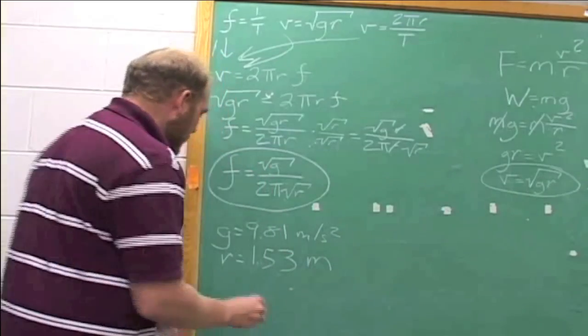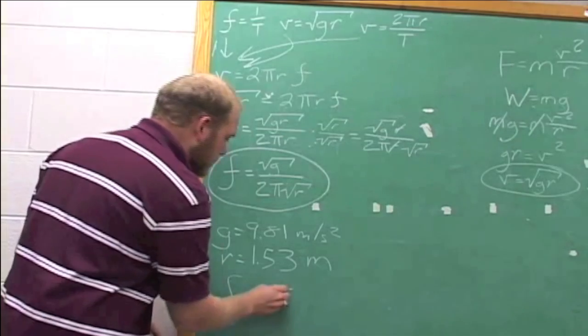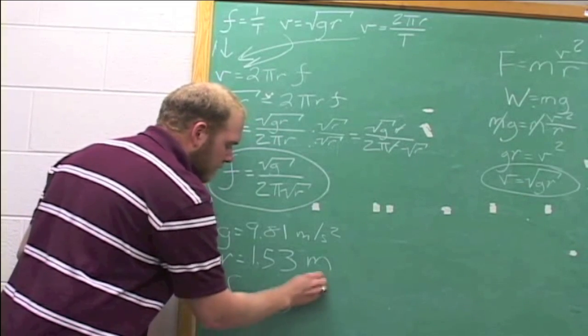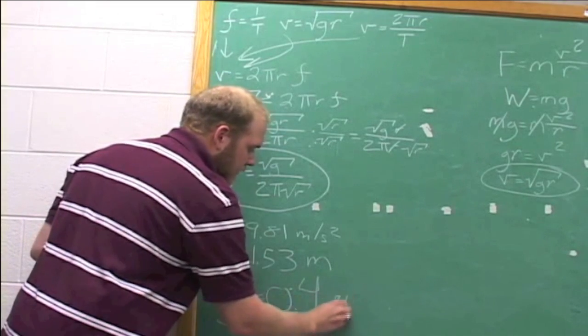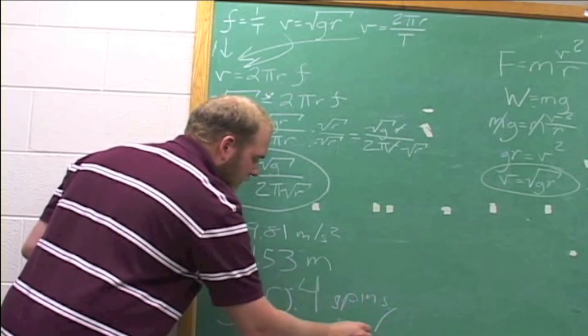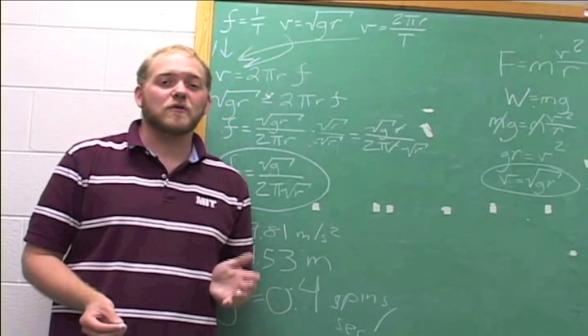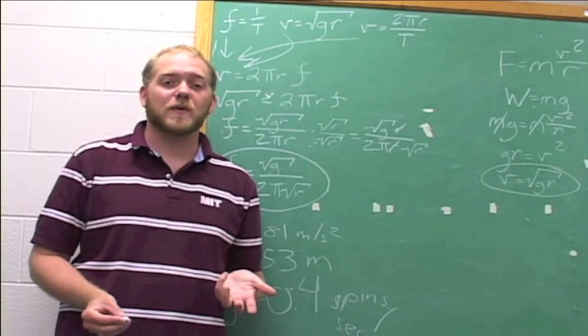Did you get the right answer? We find that the frequency is equal to 0.4 spins every second. This is equal to 24.2 rpms, or revolutions per minute.